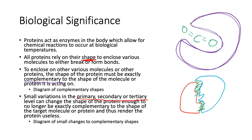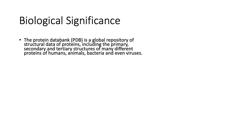The protein databank (PDB) is a global repository of structural data of proteins, including the primary, secondary, and tertiary structures of different proteins of humans, animals, bacteria, and even viruses. This protein databank contains information like: you got this one protein, it looks like this; you got this other protein, it looks like that. It's not just the primary structure like the DNA and the code—it's actually the shape of the protein, because the shape is the important part.